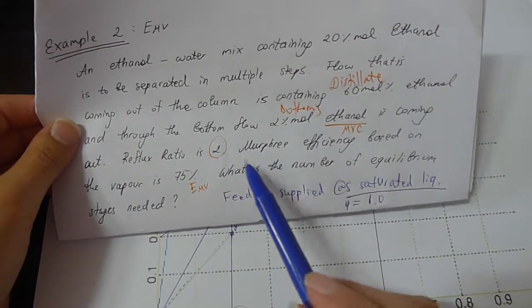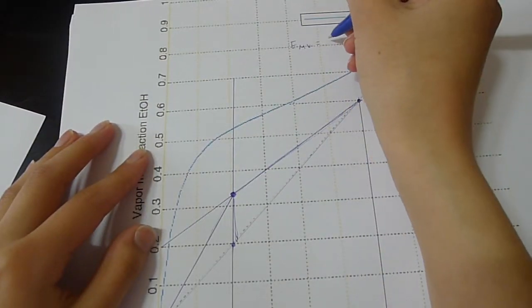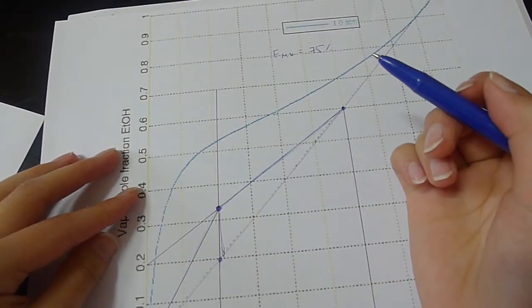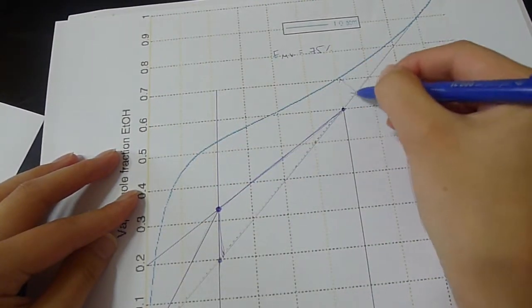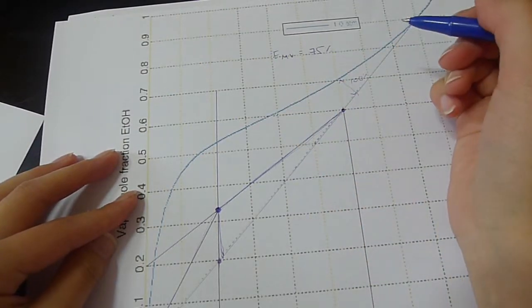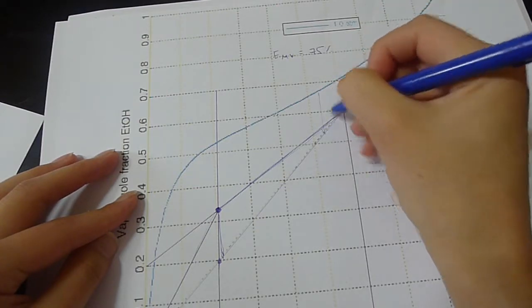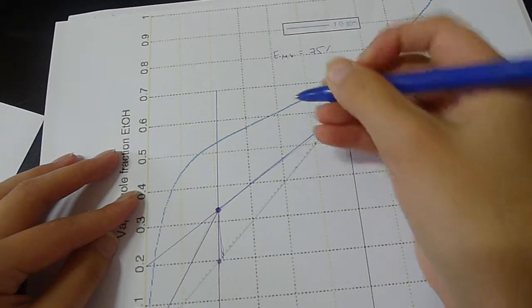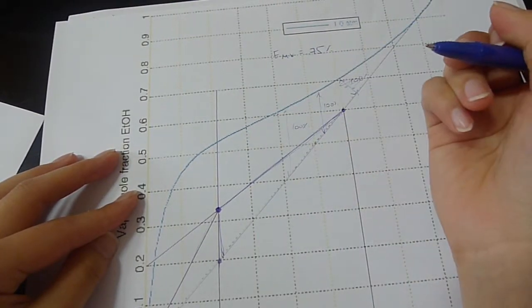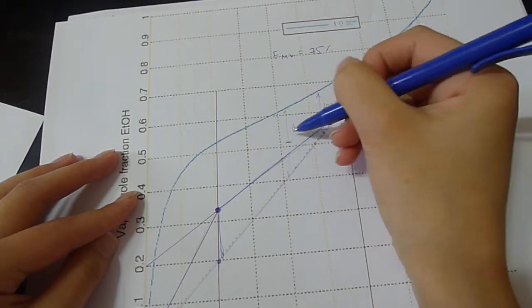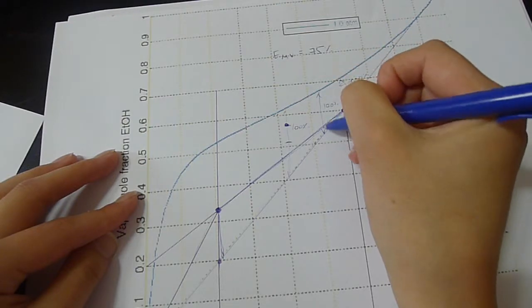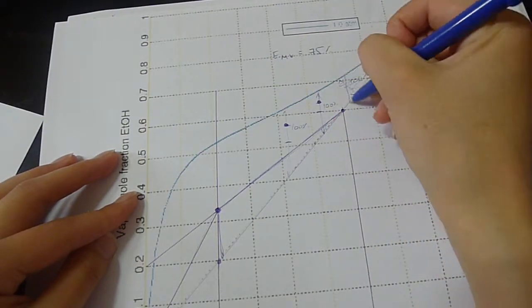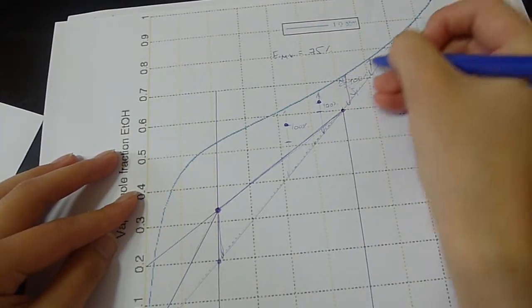Now we need to draw our stages. But remember that we have Murphree efficiency based on vapor is 75%. So EMV is equal to 75%. So how do we draw this? We will draw it approximately. So from here, we say that this is 100%. Not like this. Like this. 100%. This is 100%. So where is our 75%? It would be somewhere, this is 50%. This would be 75%.